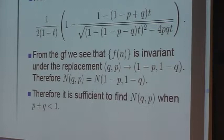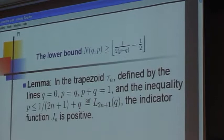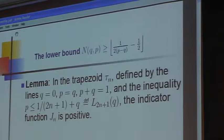So it's sufficient to find the capital N. As far as the lower bound was concerned, consider the trapezoid defined by those two lines that are stated out there and the diagonal line. And this is equality.